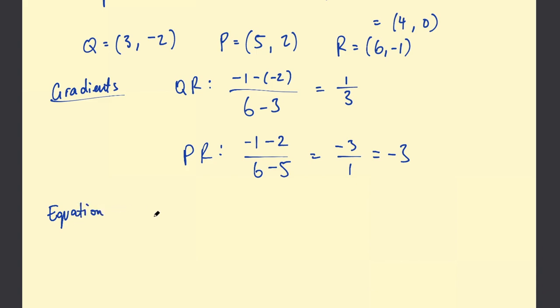Equations of lines. So for QR we've got y = (1/3)x + c. We want to find this c. We can use either of the points on that line. Let's use Q. So plugging that point in for y and x we can say that -2 = (1/3)×3 + c. So this is just 1. Therefore c equals -2-1, which is -3.